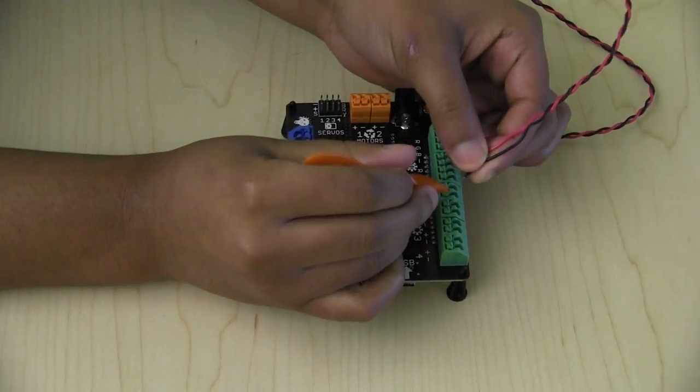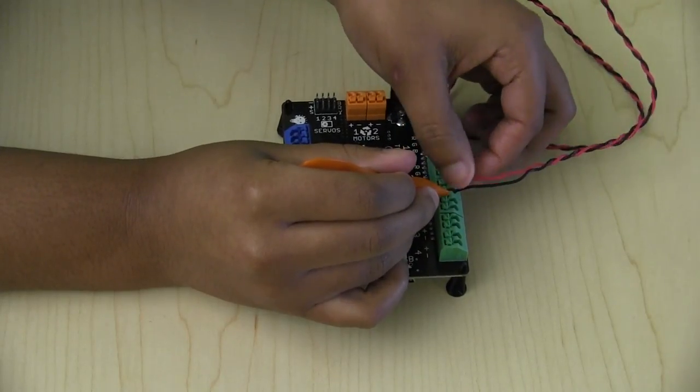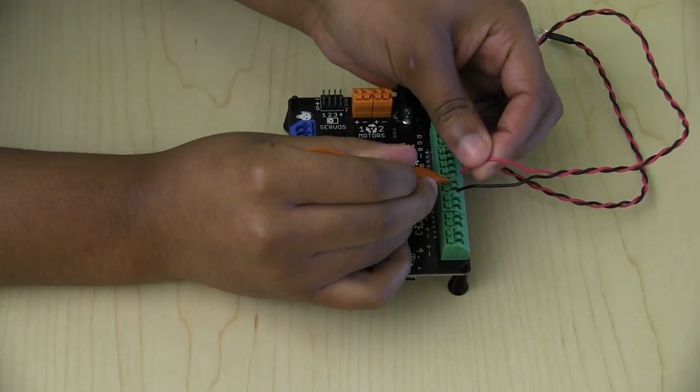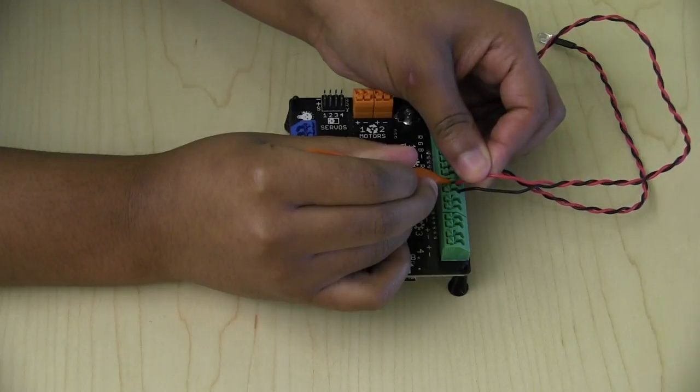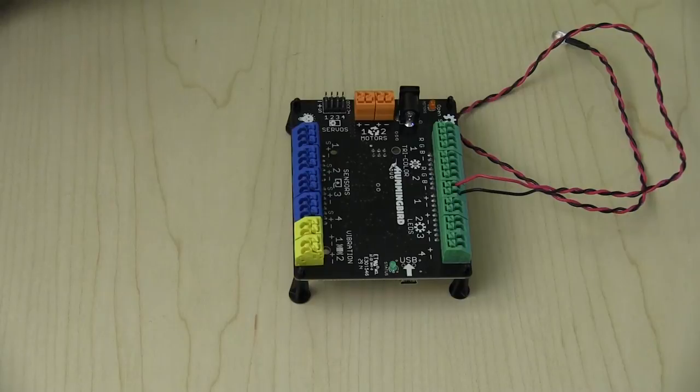To insert the wires, press down on the square terminal tab with the orange terminal tool from the kit. While the tab is pressed in, insert the metal end of the wire at an angle from the table. Once the metal end is in, release the pressure on the tab and give the wire a light tug to make sure it's secure.